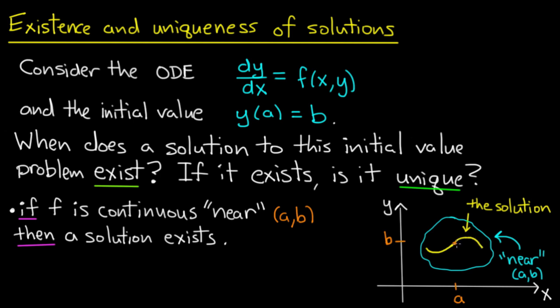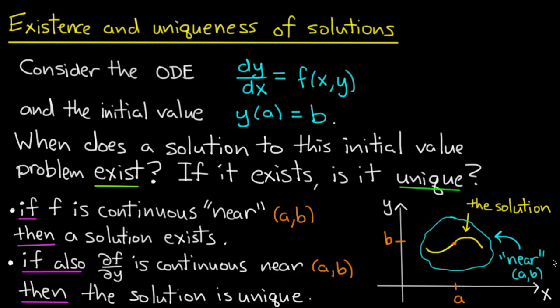Now, what about uniqueness? Who says I can't draw many little solutions through that point (a,b)? Well, I need another hypothesis to guarantee uniqueness. If, also, the partial derivative of f with respect to y is continuous near (a,b), then the solution will be unique.